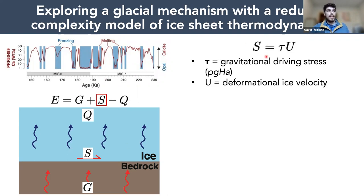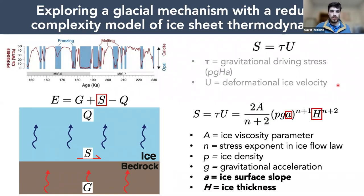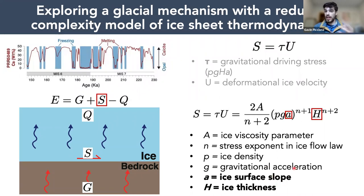Shear heating equals tau — the gravitational driving stress — times the deformational ice velocity. The variables going into shear heating are: n, the stress exponent in the ice flow law; rho, ice density; g, gravitational acceleration; a, the ice surface slope; and h, ice thickness. I highlight a and h because these are variables that can reasonably be changing on millennial timescales and are glaciologically relevant.